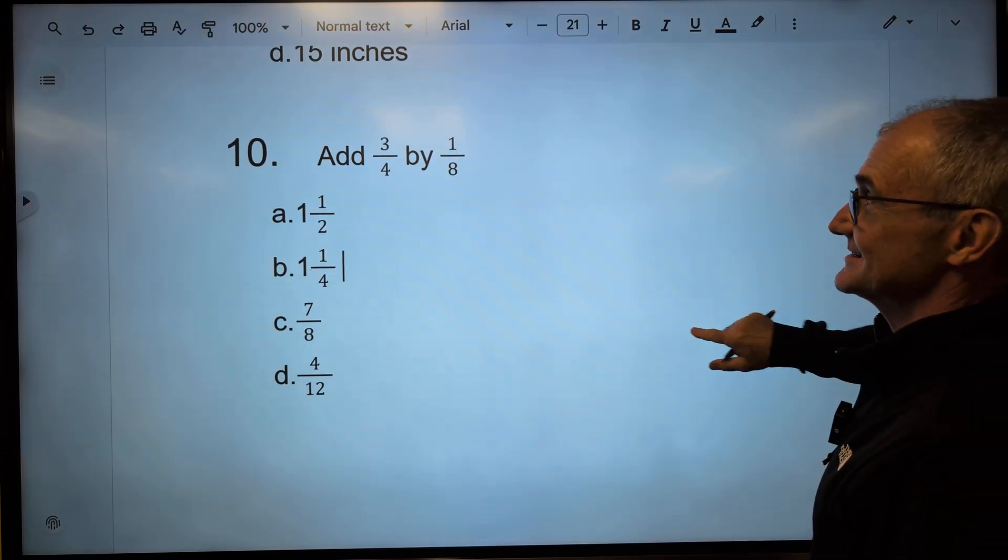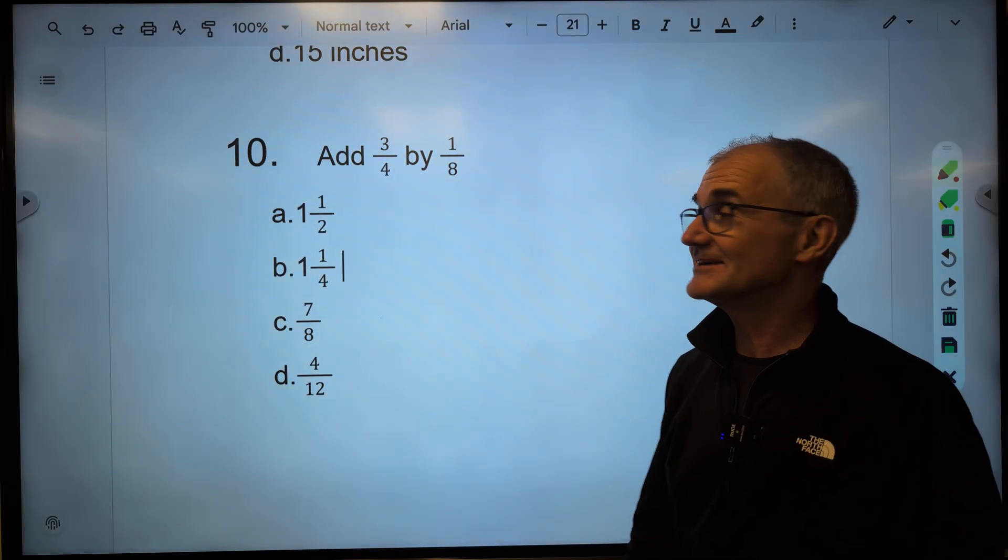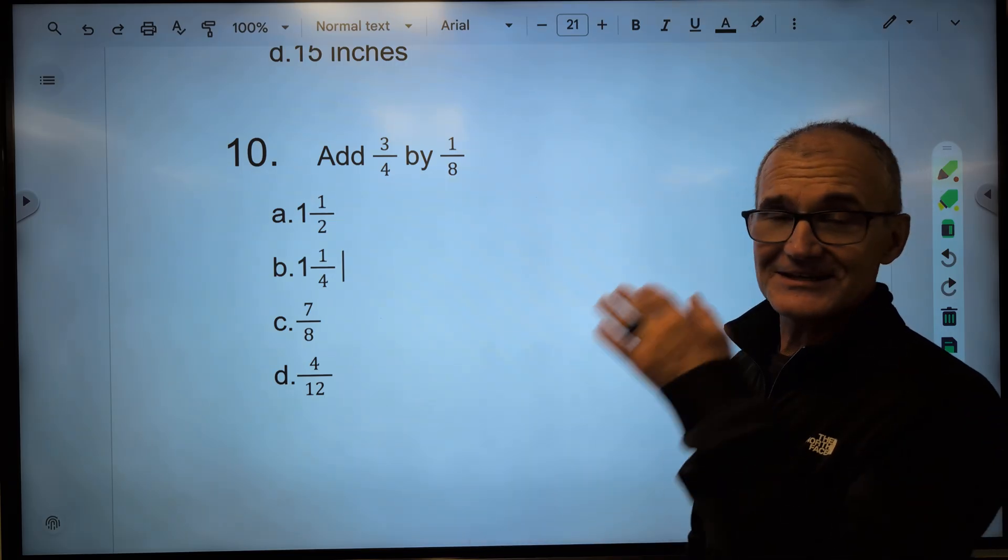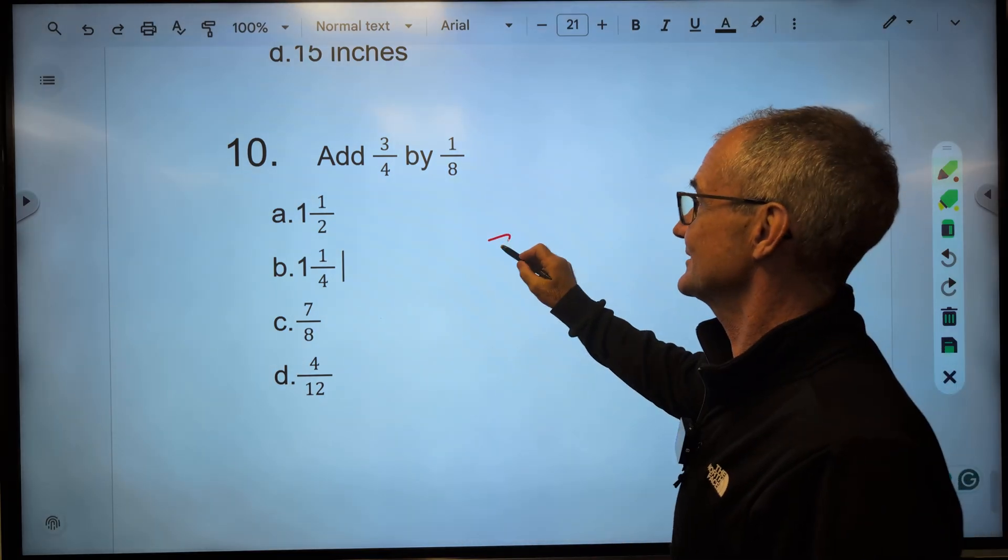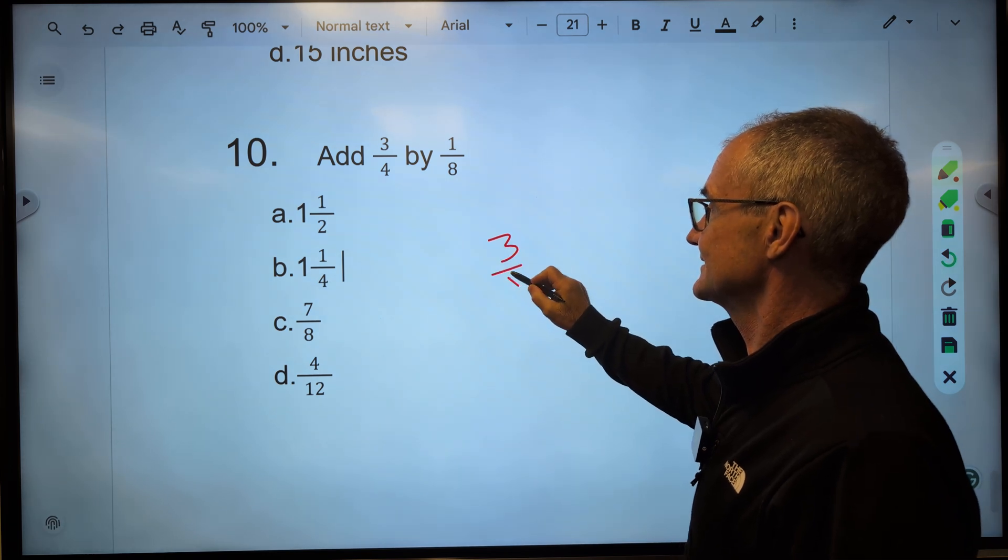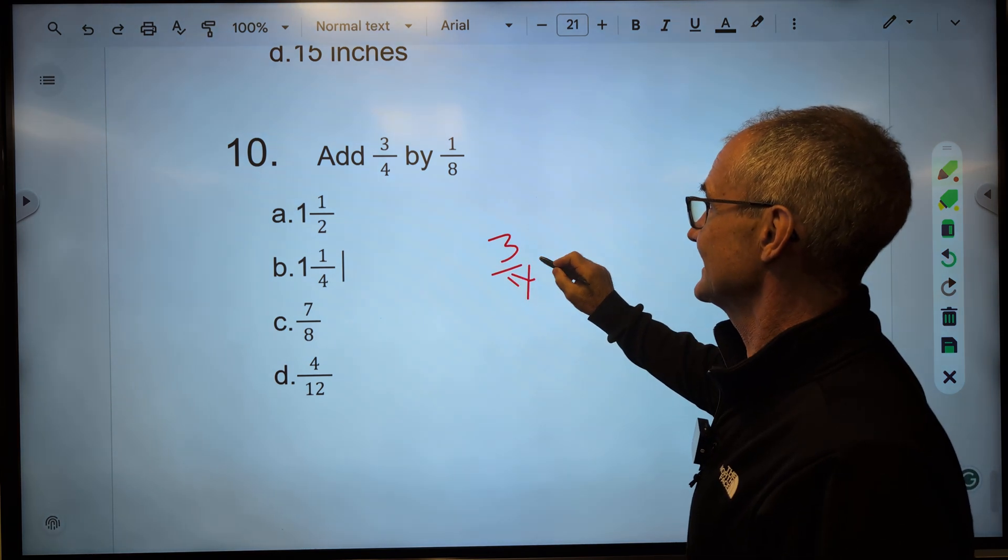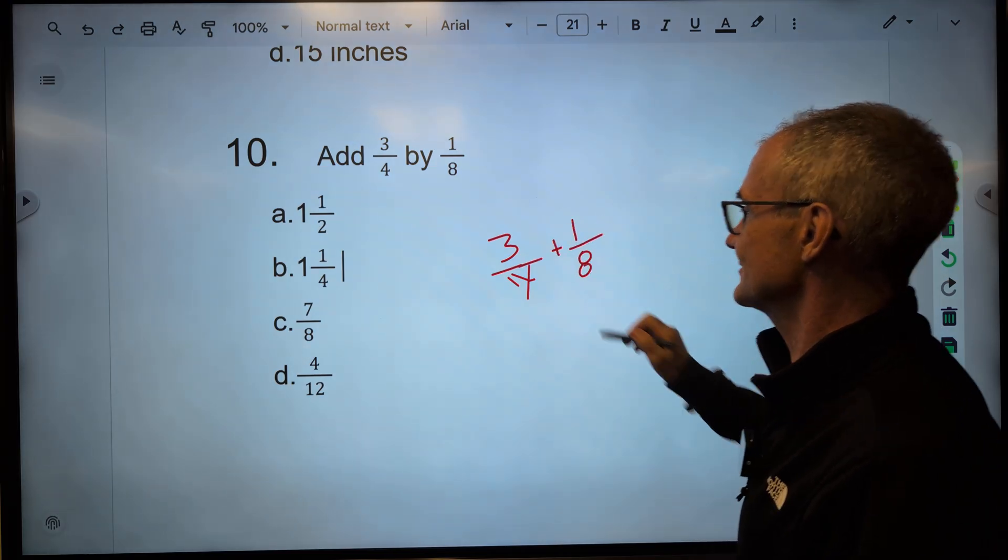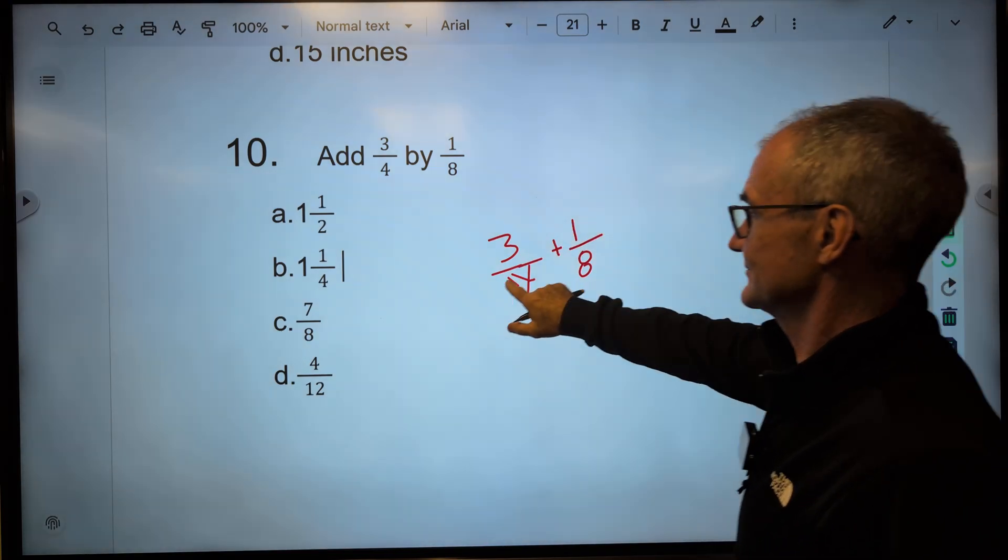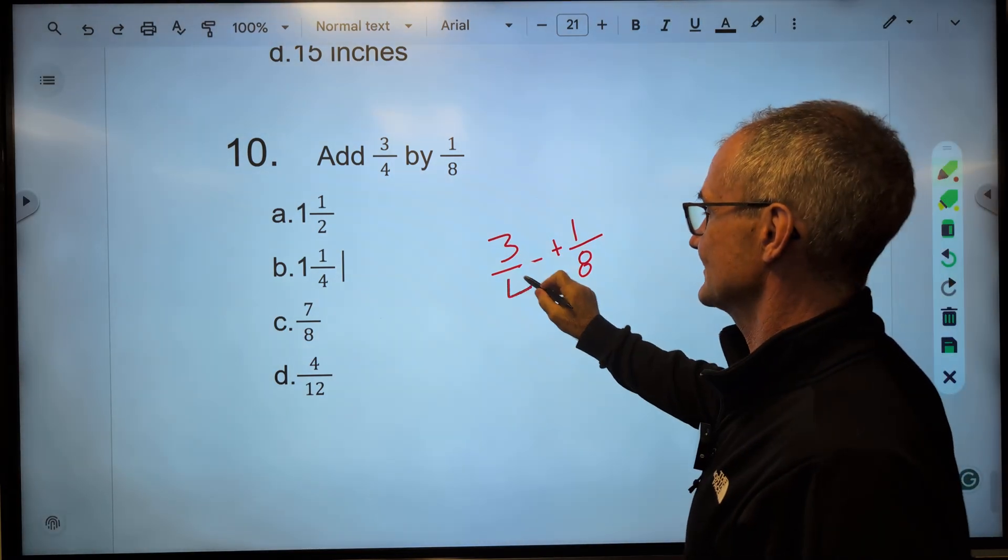All right. If you're still here, congratulations. You're doing the work. Checking it out. Pause the video, give it a try, and then we'll add up our score here. Add 3/4 and 1/8. So I have 3/4 plus 1/8.